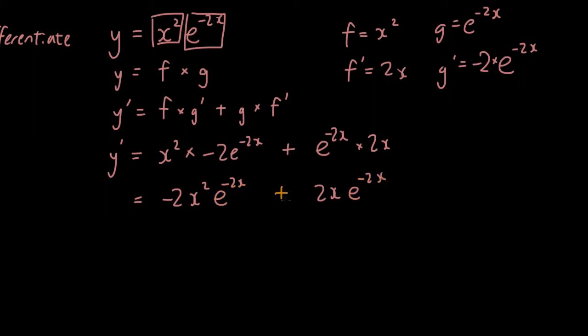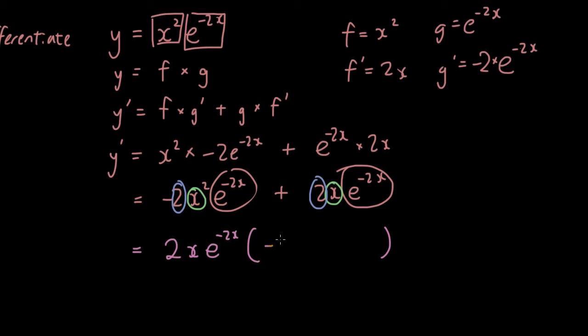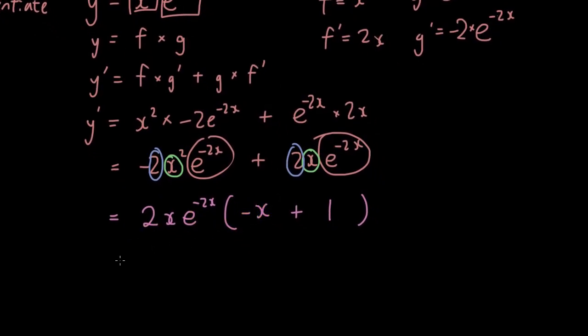Simplifying that, I have negative 2x squared e negative 2x plus 2x e to the power of negative 2x. And you can see both of these terms have e to the power of negative 2x, and they both have x, and they both have a 2. So let's take those things out and put them at the front. So I have 2x e negative 2x. Now what does this term have to multiply by to give you negative 2x squared e to the power of 2x? It has to multiply by negative x plus... well, this is pretty similar to that, so plus 1. So that is the final answer. Now normally you wouldn't put a negative at the front, so you can rewrite it as 1 minus x like that.